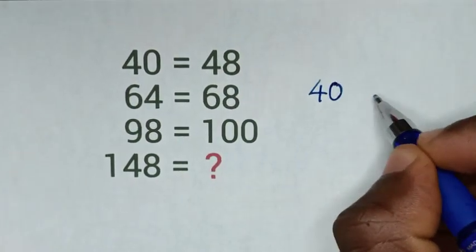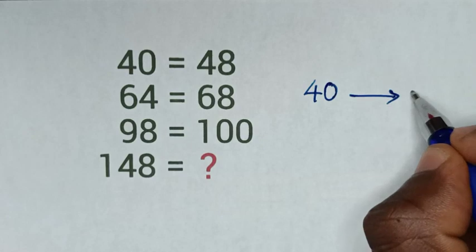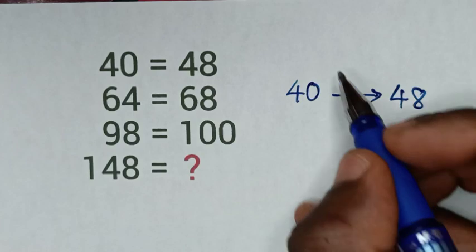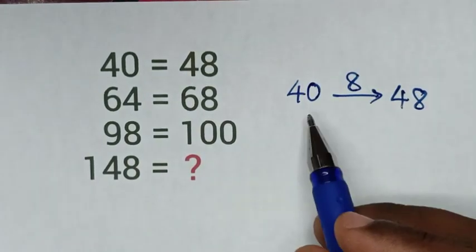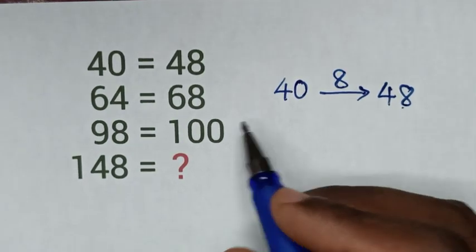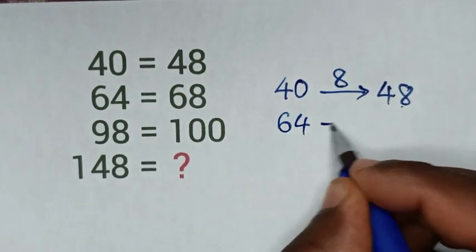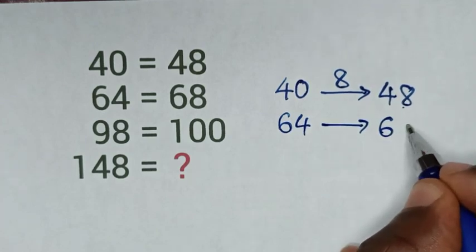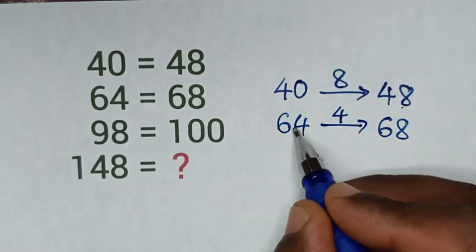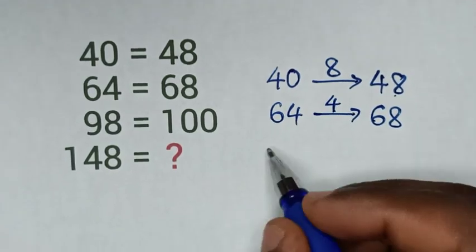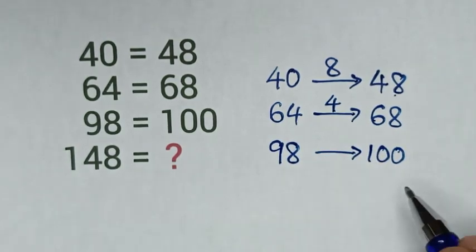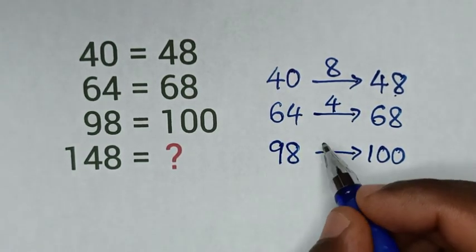From 40 to 48, we can see the difference is 8, so 40 plus 8 equals 48. From 64 to 68, the difference is 4. And from 98 to 100, the difference is 2.